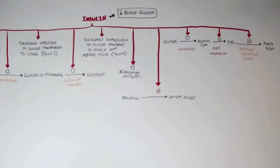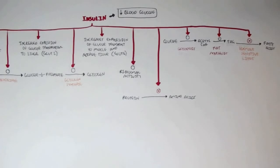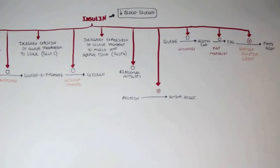In summary, insulin is important in storing excess energy in the forms of glycogen, triacylglycerols, and proteins in different organs. That concludes this video on insulin. Please watch the video on glucagon if you haven't watched it yet. Please comment, like, and subscribe. Thank you very much.